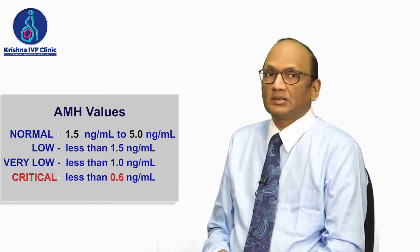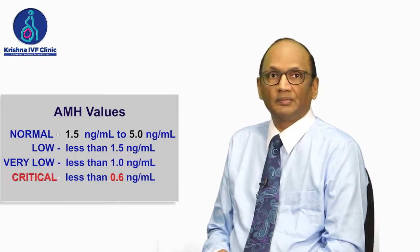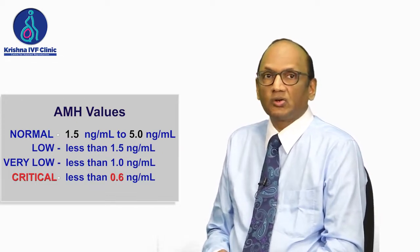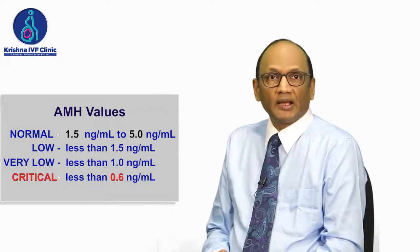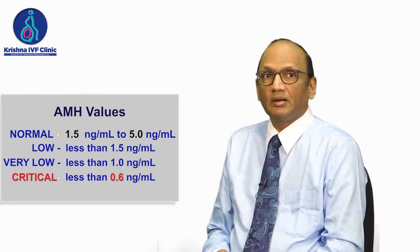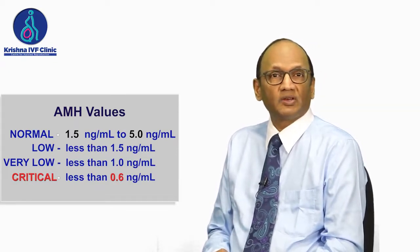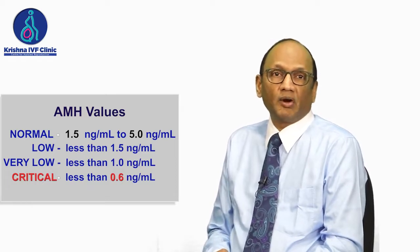If a woman has an AMH less than 1.5 nanograms per ml, they are considered on the lower side and should not delay pregnancy planning. If AMH is less than 1, they should not postpone pregnancy by more than six months to a year, as it will make a huge difference. When levels are at 0.6 nanograms per ml, this is a real crisis — the number of eggs obtained in IVF becomes very low, compromising success rates.